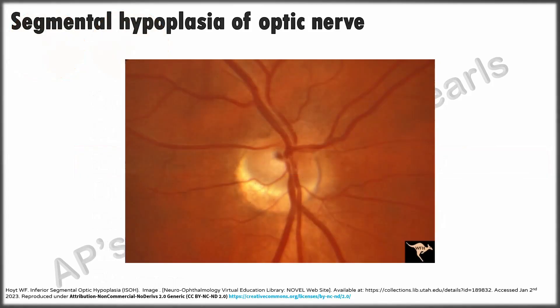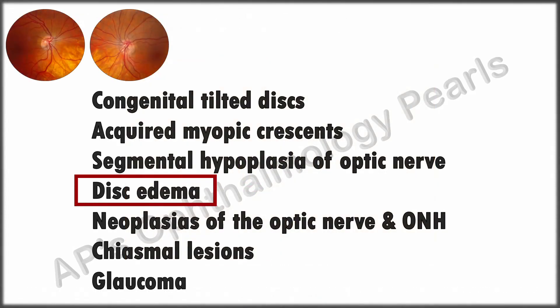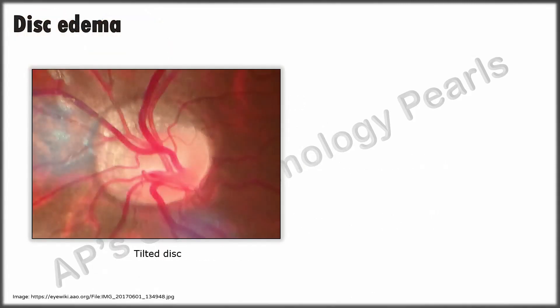Segmental hypoplasia can simulate a tilted disc due to asymmetric loss of axons, which occurs due to intrauterine insult to a part of the visual system. A relevant history may help; however, an MRI is usually needed to localize the site of primary injury along the visual pathway.